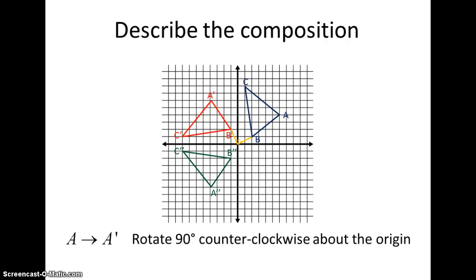Now by looking from the prime to the double prime shape we can see that the corresponding vertices are all equal distance across from the X axis this time. So this would be a reflection in the X axis.